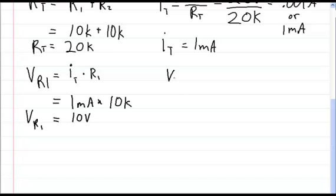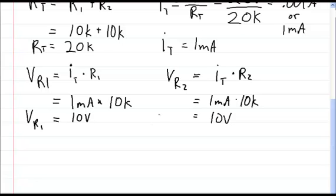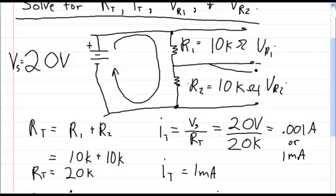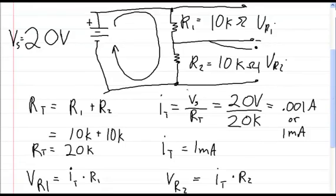Now let's solve for the voltage on the second resistor, VR2. That's going to be equal to the total current times R2 — 1 milliamp times 10 kilo ohms — so again you get 10 volts. That makes sense because the voltage of the supply equals VR1 plus VR2, and since it's 20 volts, 10 plus 10 checks out. Since both resistors have the exact same resistance, each one drops half of the voltage from the power supply.